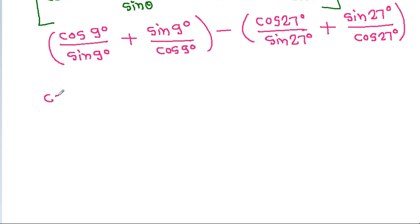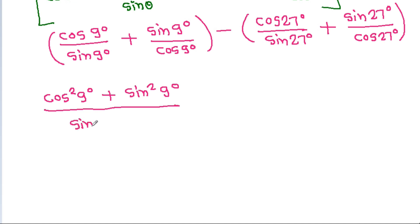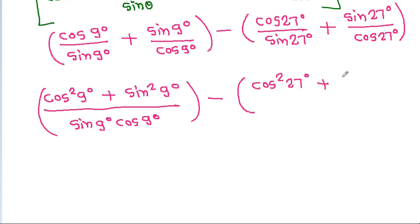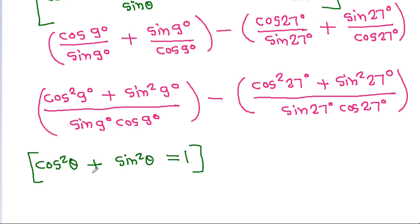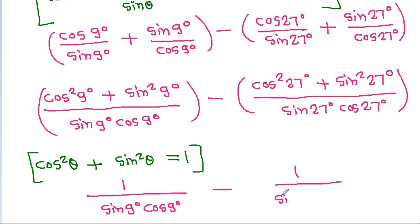Combining, we get (cos²9° + sin²9°) by (sin 9° cos 9°) minus (cos²27° + sin²27°) by (sin 27° cos 27°). Since cos²θ + sin²θ equals 1, this simplifies to 1 by (sin 9° cos 9°) minus 1 by (sin 27° cos 27°).